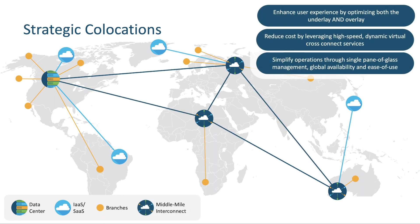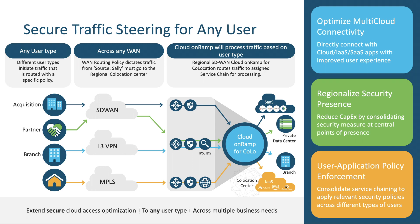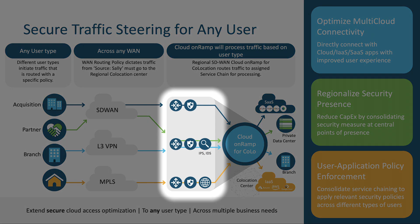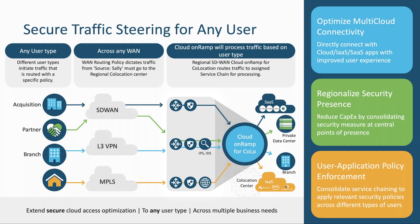Cloud OnRamp for Colocation allows organizations to not only stitch together an optimized path from the branch to the cloud, it also allows customers to virtualize any sort of network function they wish, meaning administrators can insert network functions like firewalls, malware protection, or optimization appliances into their user's transit path with relative ease. Cloud OnRamp for Colocation has been establishing itself within the market for a year and a half or so now, but what's the latest with this feature and where are we going?